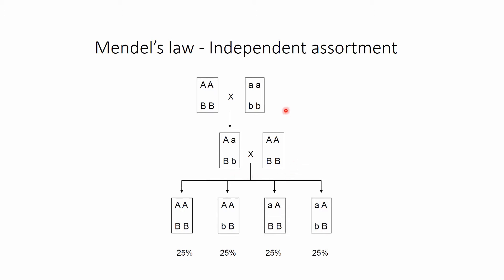We then mate it with another individual which is entirely homozygous for alleles A and B. When the law of independent assortment is valid, we get four possible genotypes, and if our sample is big enough we have all these possible genotypes with a 25% probability.